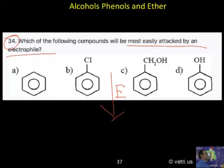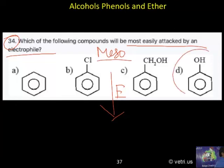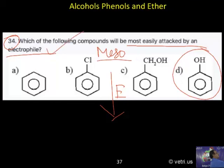The answer is D, because this comes under the mesomeric effect. According to the mesomeric effect, electron-releasing groups normally favor electrophilic substitution. The order is NH₂ > OH > OCH₃ > CH₃. So number one will be OH. So D is the answer — phenol will most easily undergo electrophilic attack.